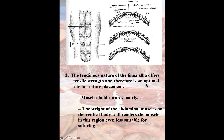The tendinous structure also provides tensile strength, making it an optimal site for suture placement. When we suture muscle tissue, it typically leads to muscle damage. But if we suture in the area of the linea alba, the connective tissue holds the suture better than muscle.